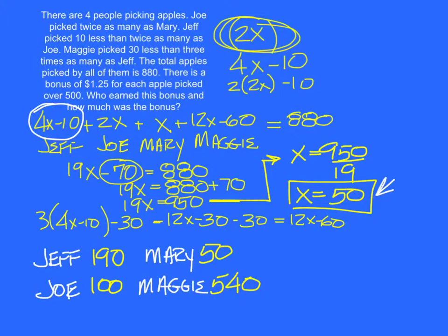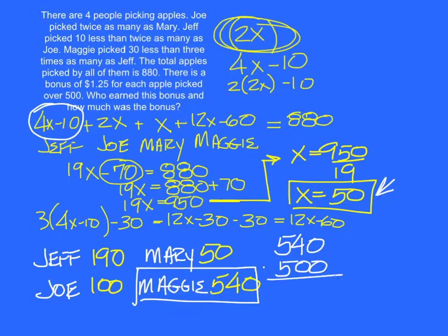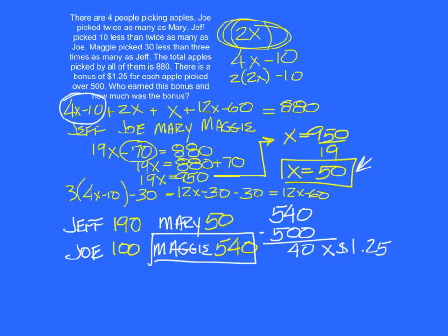Well, that's what we know for each person, so we have to look at the rest of the problem. There is a bonus of $1.25 for each apple picked over 500. So does that mean they get $1.25 for all the apples they picked or just the ones over 500? Just the ones over 500. Right, just the ones over 500. So the only one over 500 is Maggie. How many apples over 500 did she have? She had 540, and if we take away the bonus limit of 500, she ends up with 40 over 500. And we multiply that 40 by the $1.25. What is 40 times $1.25? $50 even. All right, so that is the bonus. Maggie earned $50.